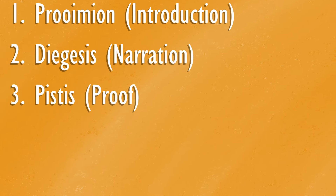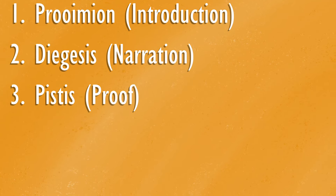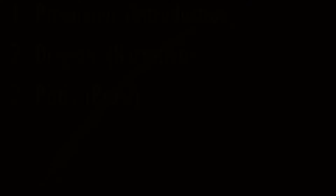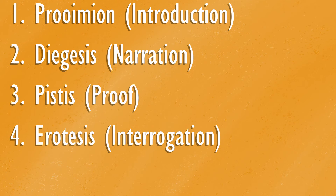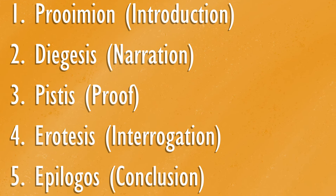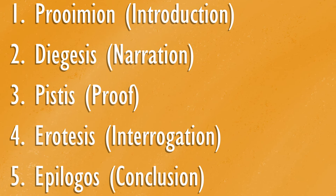Third comes pistis, or proof — a somewhat rambling chapter, in the words of translator George A. Kennedy, that discusses the ways that speakers can demonstrate their position, essentially showing that their position is reasonable and sound. Fourth comes erotesis, or the interrogation, where a speaker questions the position of their opponent. Fifth and finally, epilogos, or conclusion, which serves the purpose of getting the audience to sympathize with your position and disfavor the opposition, to reaffirm what you demonstrated in the proof section, move the audience to an appropriate emotional reaction, and remind them of the major points in the argument.